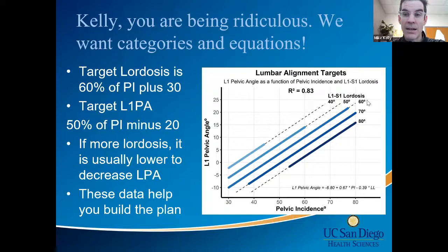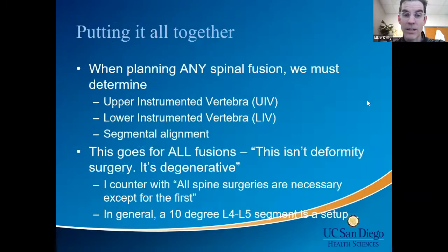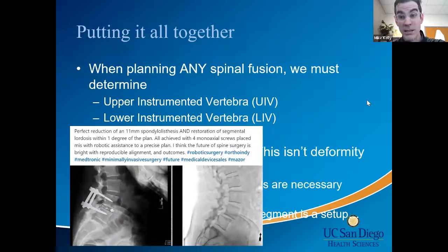How to target: in general, target L1PA as 50% of their pelvic incidence minus 20. For very low PI patients, L1 will be behind the sacrum; for higher PI patients, L1 will be in front of the sacrum. Target lordosis is 60% of pelvic incidence plus 30. L1PA is useful intraoperatively because you can measure centroids. We need to stop posting cases on LinkedIn with monoaxial screws and zero degrees of lordosis and calling it precision medicine — it's accurate, meaning they did what they intended, but it's not precise.